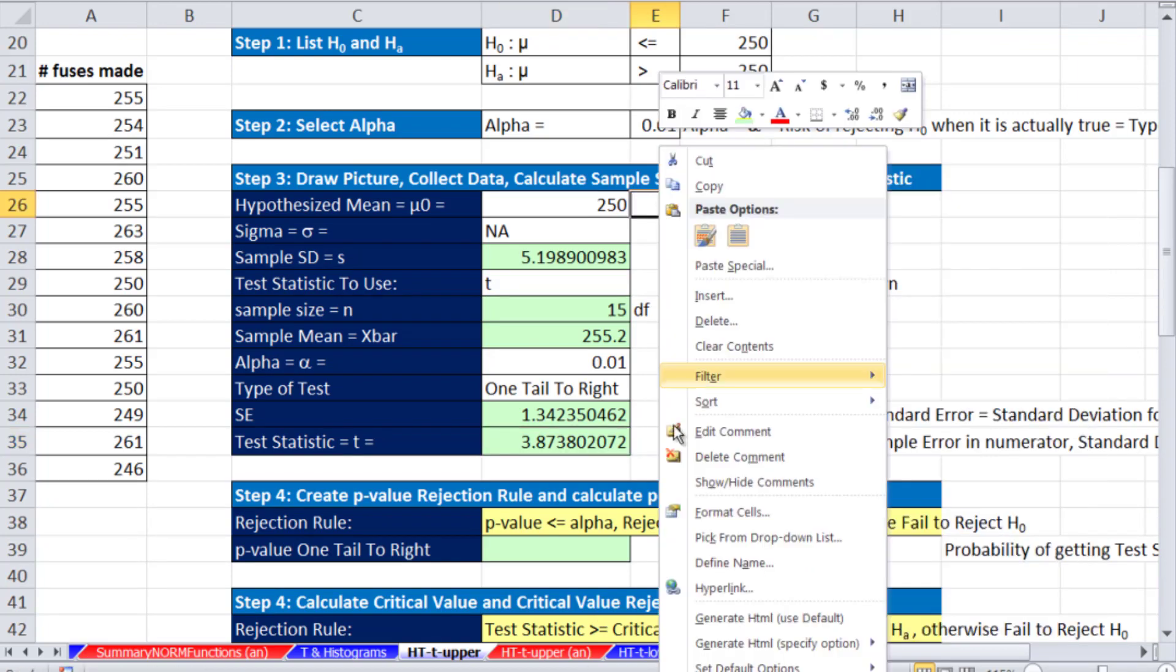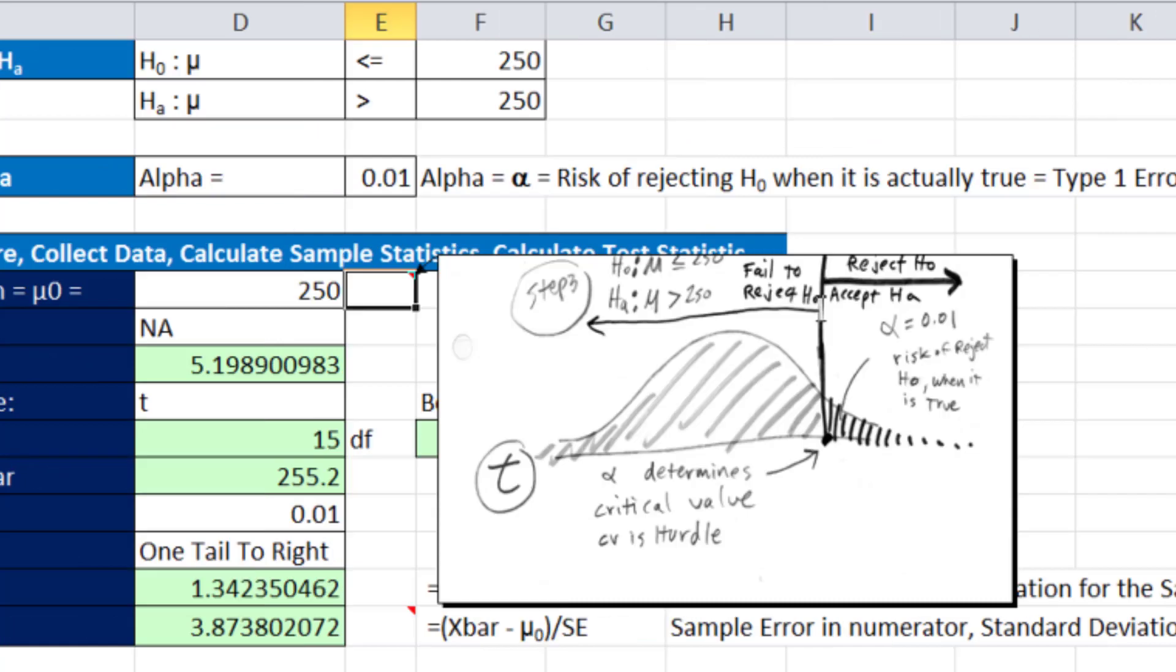Now, let's look at a picture here. I'm going to right click show this. There's our picture, right? We have a hurdle alpha equals 0.01. Anything above the test statistic, if it's above here, we're going to reject the null and accept the alternative. Anything in this direction, we're going to fail to reject the null hypothesis. So, we have our test statistic. And that's going to determine if it's on this side, fail to reject, this side, reject.